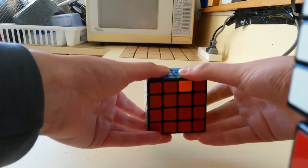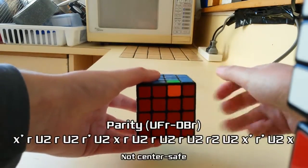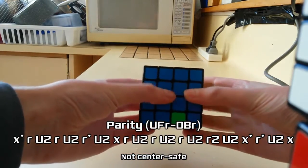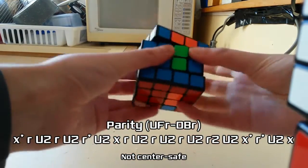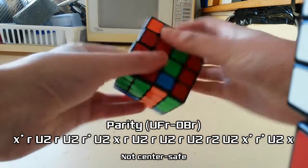The last thing is parity, which just swaps these two pieces. Just execute it less horrendously than me and you'll be fine.